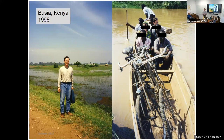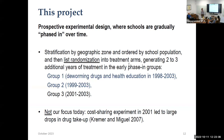I mention that partially for context, but also when thinking about external validity — this is a setting with really bad worm infections compared to many others. We worked with an NGO and the government of Kenya, which provided public health nurses for treatment. After stratification, there was a list randomization where 75 schools were put in a spreadsheet and counted down the list to divide into three treatment groups of 25 each. We didn't use a random number generator — we wanted to be transparent to local government officials about how allocation occurred, since randomization was a new approach.